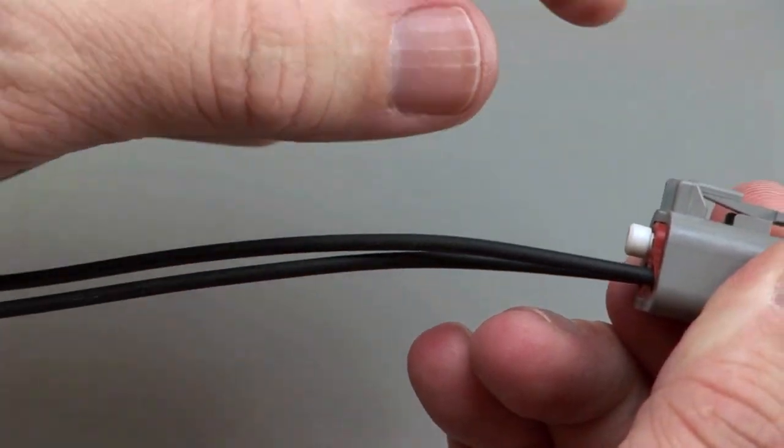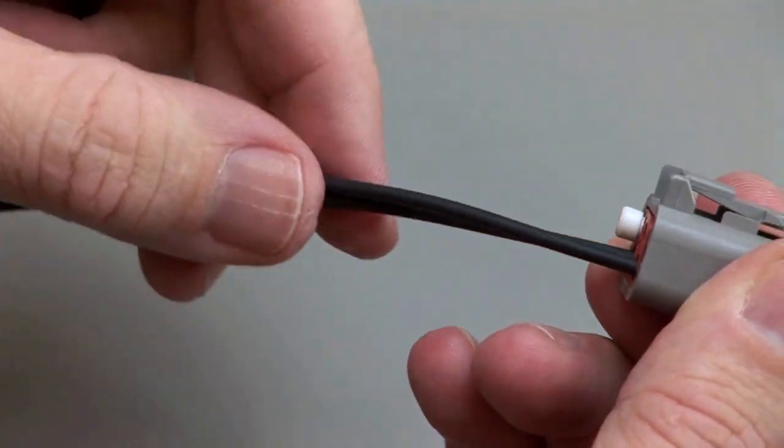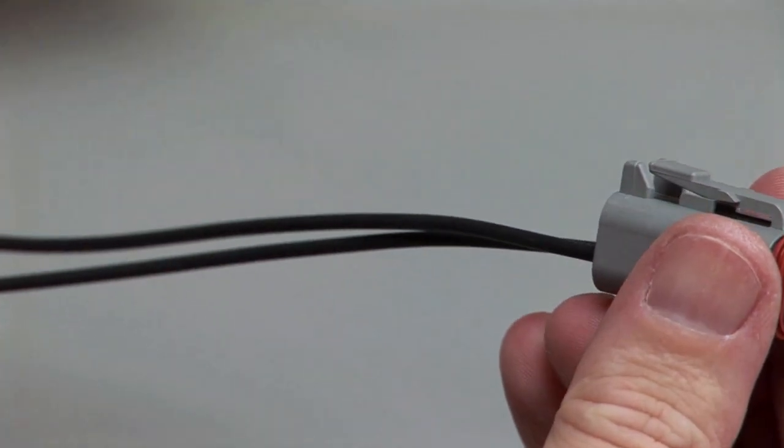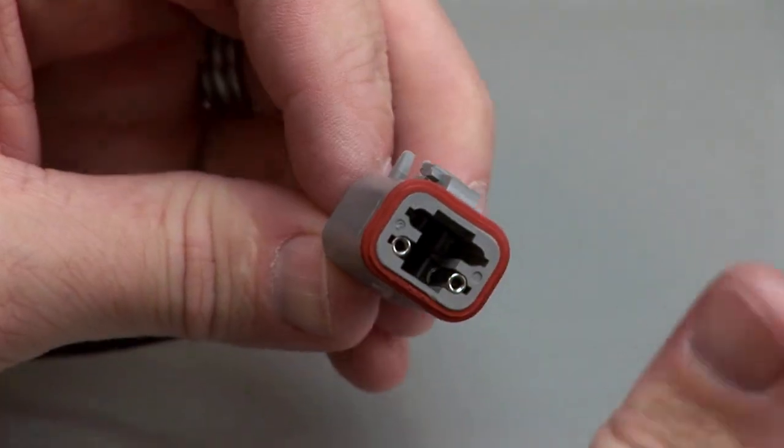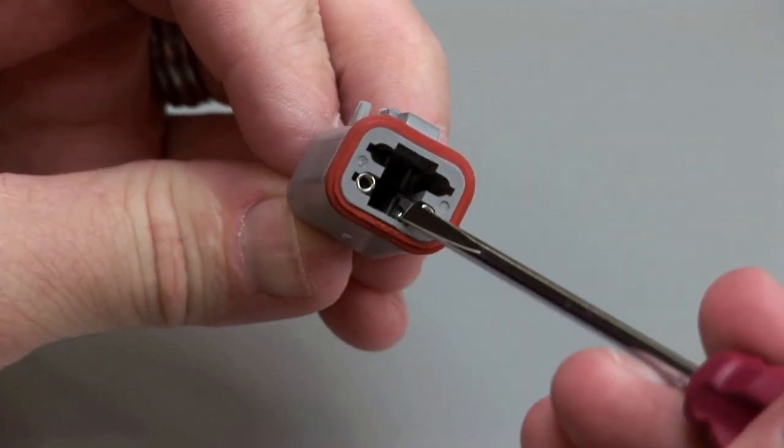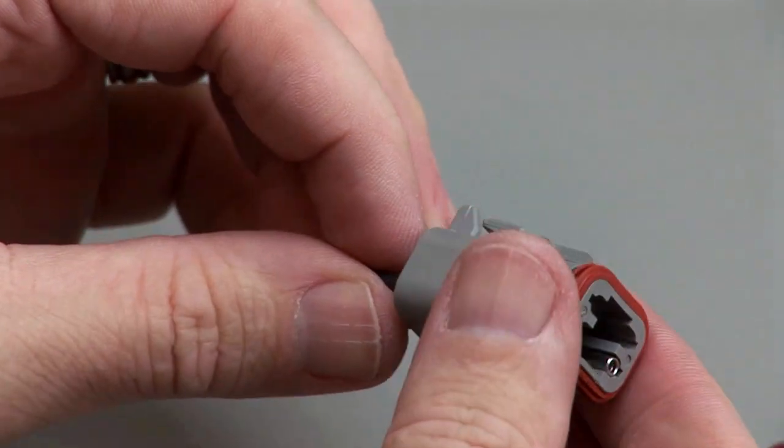Removing the contact may dislodge the rear grommet, so it may be necessary to hold the rear grommet in place when pulling the wire out. Repeat this process for all of the wires in the plug and the receptacle.